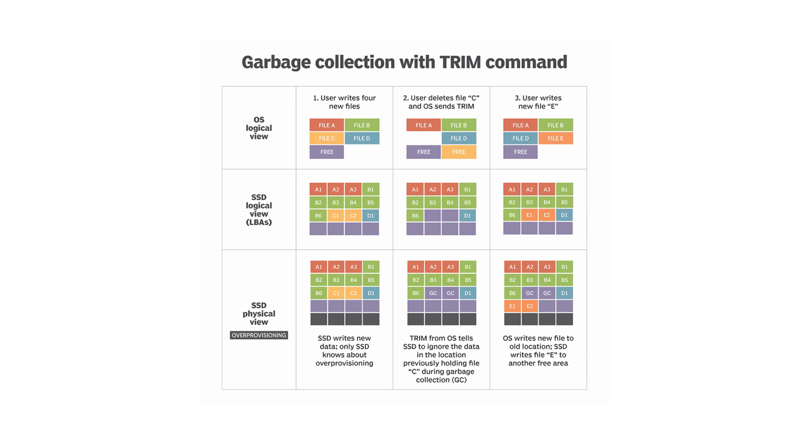Now that we have a solid foundation, let's talk about the main topic of this video: trim. Trim has been available on most modern operating systems for a number of years, including Windows, Linux, Mac OS, and FreeBSD. When data is deleted from an SSD the OS marks the space as available, but the SSD controller doesn't automatically know which pages contain that deleted data. Without trim, the SSD controller assumes that all pages — even those with deleted data — still contain valid data, leading to inefficient garbage collection and slower write operations since the controller needs to read, erase, and rewrite blocks containing both valid and invalid data.